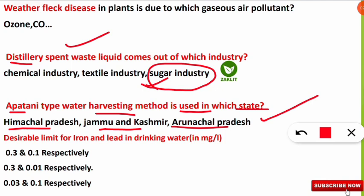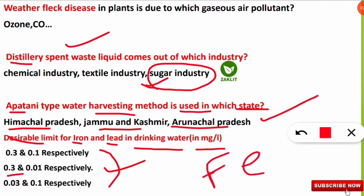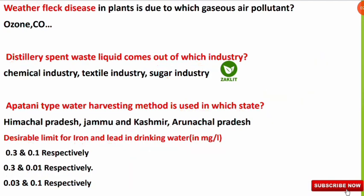The next very important question was about water quality parameters. The question asked about the desirable limit for iron and lead in drinking water in milligrams per liter. The correct option is: 0.3 mg/L is the desirable limit for iron (Fe), and 0.01 mg/L is the desirable limit for lead (Pb) in drinking water.